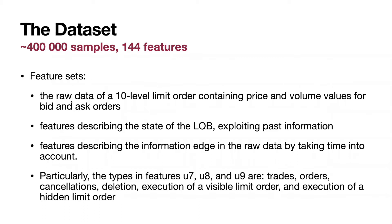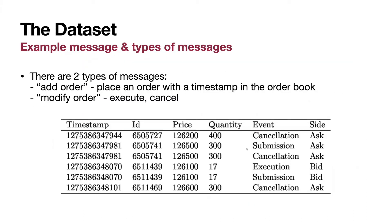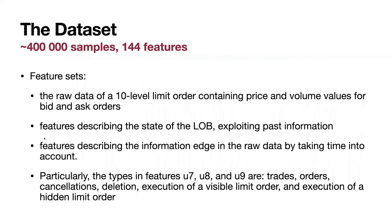First, there is data of the raw 10-level limit orders with price and volume for bid and ask sides. It looks like this. Additionally, there are features describing the state of the limit order book, exploiting past information, like calculated total volume, level volume, average price, and others.